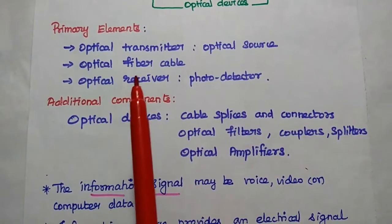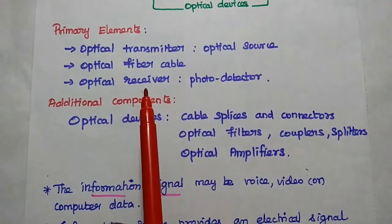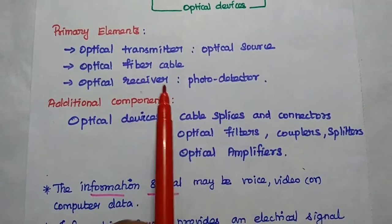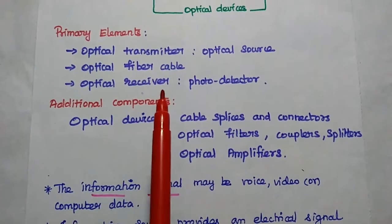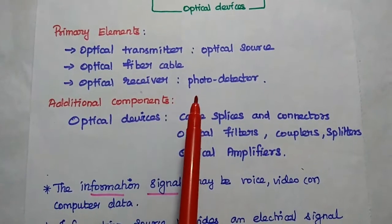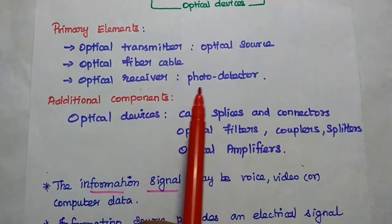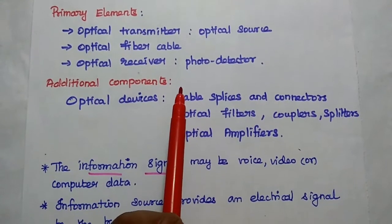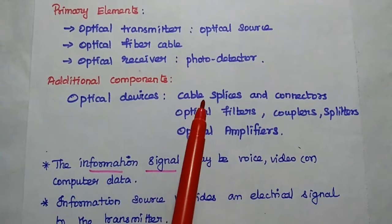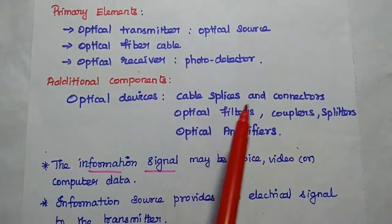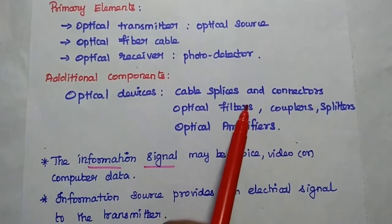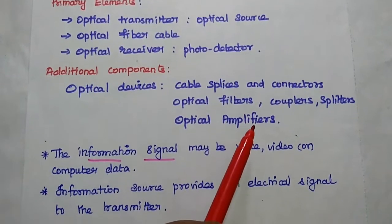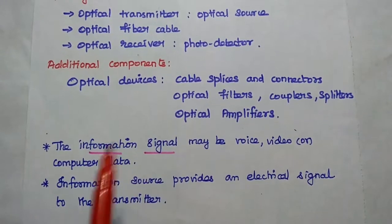Primary elements are optical transmitter, optical fiber cable as a medium, and optical receiver where the photo detector is used to detect the received optical signal. The additional components are optical splitters and connectors, optical filters, couplers, splitters, and amplifiers.